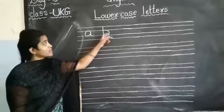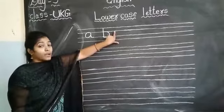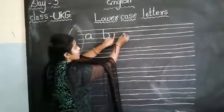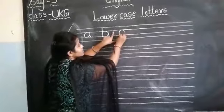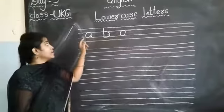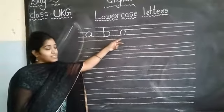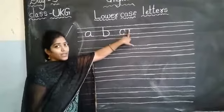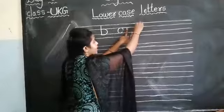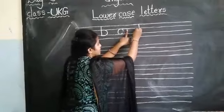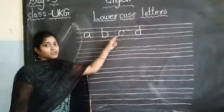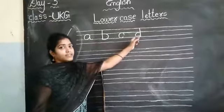So after that, again you have to keep your finger. So keep your finger here and write. Which letter will come children? Small c. What will come? Small c. Small a, small b, small c. So after that, again you have to keep your finger. So next which letter will come? Small d. Small a, small b, small c, and small d.